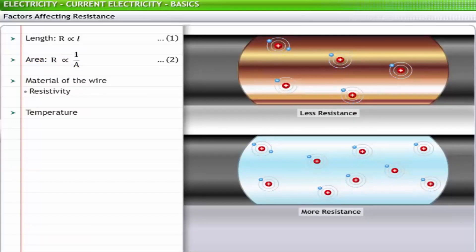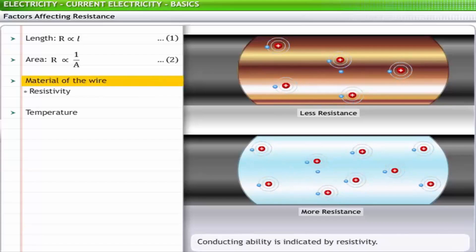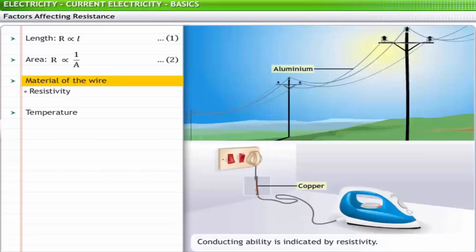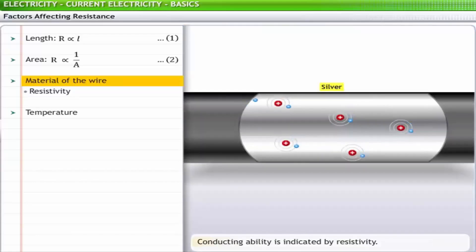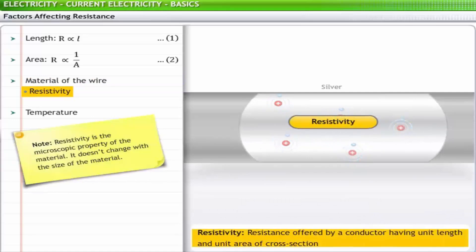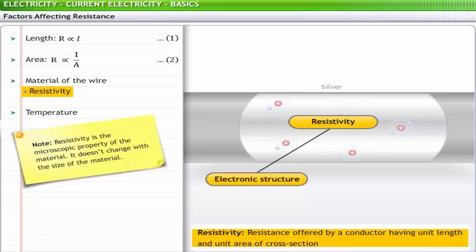The third factor that affects resistance is the material that a wire is made of. Some materials are better conductors than others and offer less resistance to the flow of charge. For example, silver is the best conductor; however, it is never used in household circuit wires as it is expensive. Copper and aluminium are among the least expensive materials with suitable conducting ability. The conducting ability of a material is often indicated by its resistivity — the resistance offered by a conductor having unit length and unit area of cross-section.